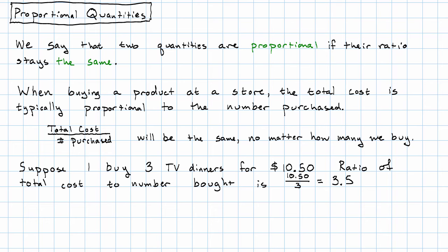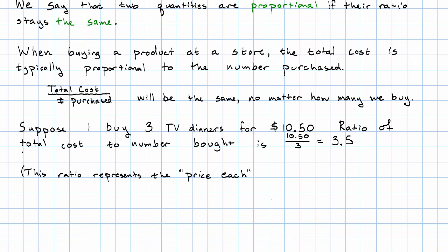Now, since we have an intuition into this situation, we have an understanding of what that ratio actually represents. That ratio represents the cost per dinner. In other situations involving proportional quantities, we might not have such an intuitive understanding of what that ratio represents. But that's okay. We can still use the ratio in the way we're about to describe.